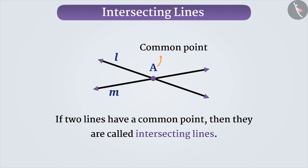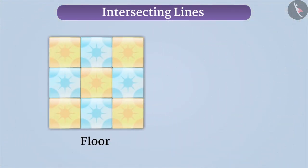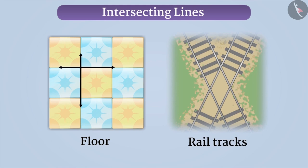Pause the video and remember the situations where you would have seen such intersecting lines. The intersecting lines can be seen in many situations such as the floor of a house. Many times the floors are arranged in such a way that they form the intersecting lines. When the rails meet at one place, they form intersecting lines.